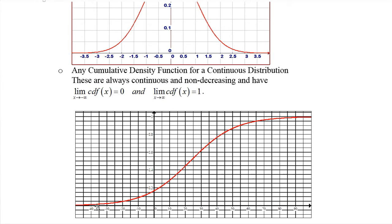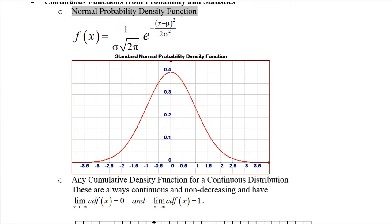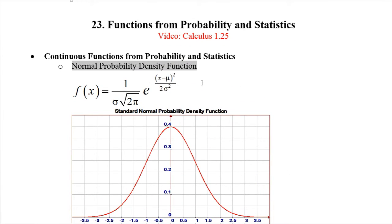In fact, any cumulative density function for a continuous distribution will always be a continuous, non-decreasing function. It could be level for a while, but it never decreases. As we go left to right it increases, and either it's zero on the left and one on the right, or it has an asymptote of zero on the left and an asymptote of one on the right. The limit as x goes to minus infinity of the CDF is always zero, and the limit as x goes to infinity is always one. It is a continuous function. Anytime you have a continuous distribution, the CDF is actually a continuous function, whether or not the PDF is. The normal probability density function is also continuous. There's a lot more detail about PDFs and CDFs for continuous distributions in my third product playlist from statistics.